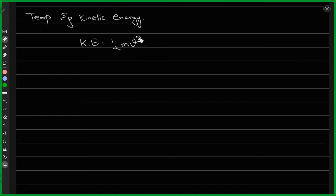In thermodynamics or statistical physics, the analog of this velocity is really temperature. Because if I have a particle moving with some velocity, a higher velocity means the particle moves fast; a lower velocity means it moves slow. Similarly, in thermodynamics, that information is communicated to you via temperature.